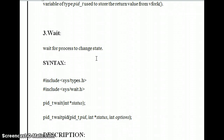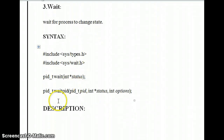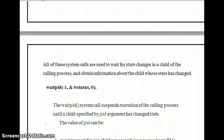The next system call is wait, which waits for processes to change state — whether it is the parent process or child process, it waits for the state to change. The same header files are included, plus wait.h. A process ID is taken, wait() is called with a status parameter. waitpid() takes a process ID, a status pointer, and options. If a wait is not performed, the terminated child process can go into the zombie state.